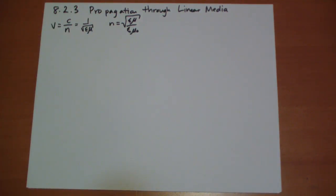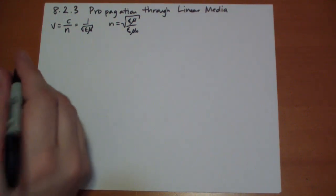And so what we can do is just replace everywhere we saw epsilon not with epsilon and mu not with mu. And so we get the equations that are rather easy to write down.